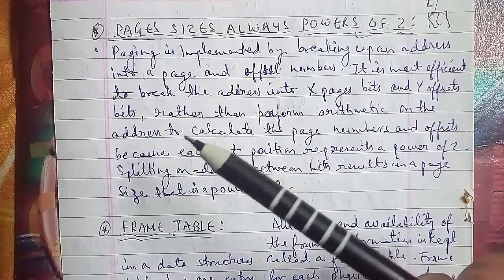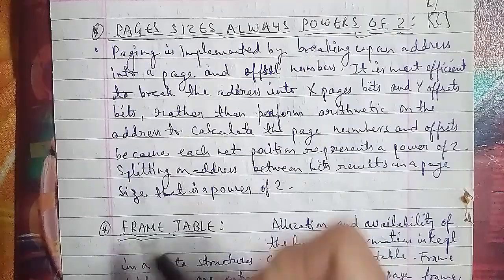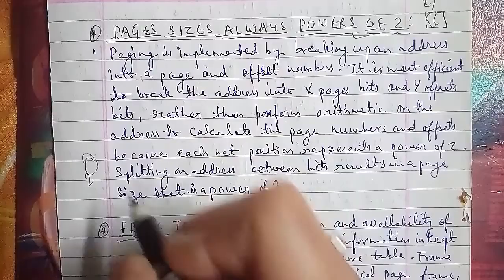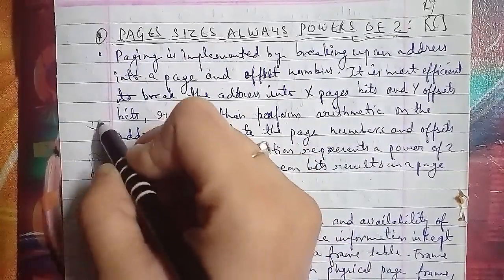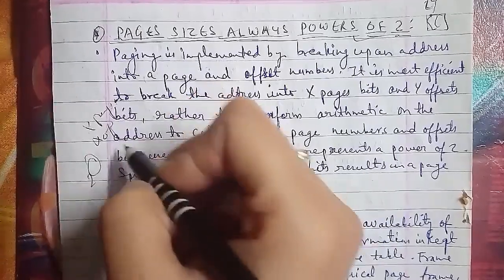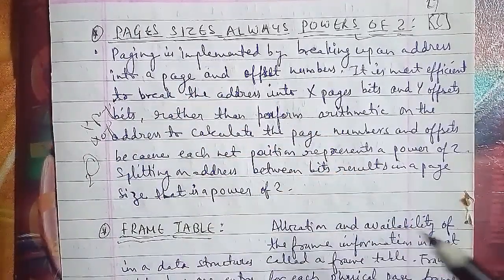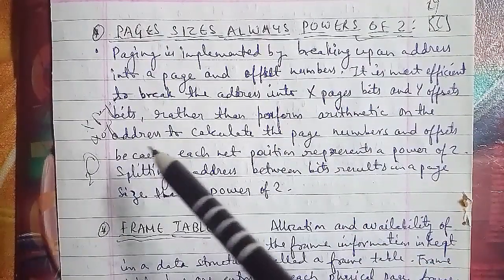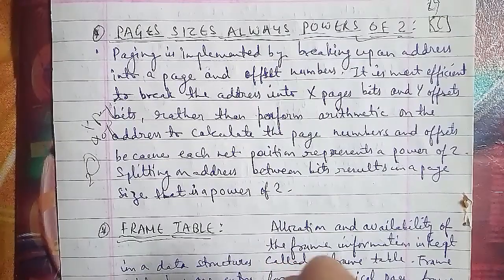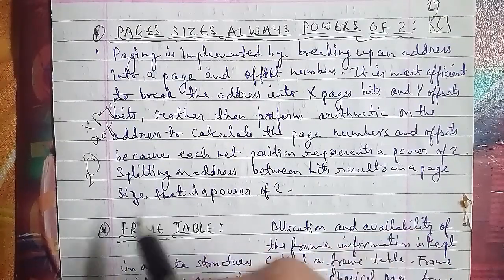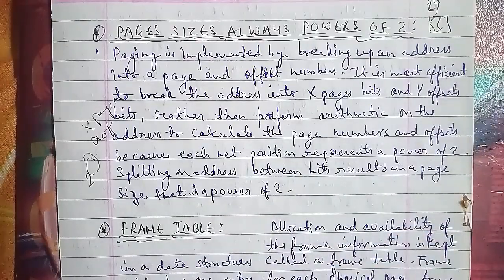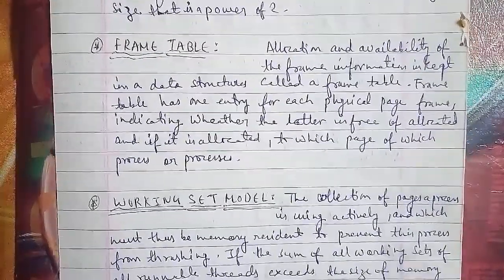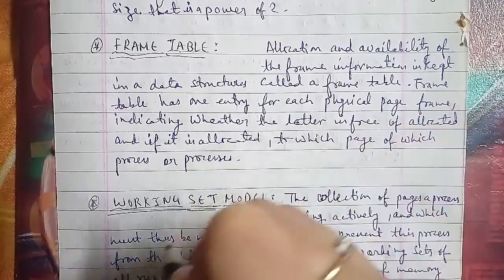Frame table: allocation and availability of frame information is kept in a data structure called the frame table. The frame table has one entry for all physical page frames, indicating whether the frame is free or allocated, and if allocated, to which page and process it is used.